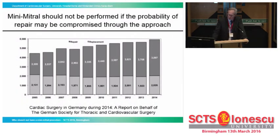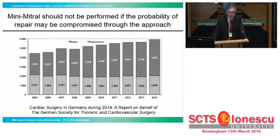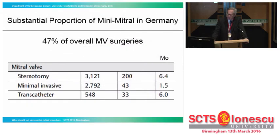This is the German registry for the year 2014, showing the proportion of mitral repair versus replacement. Two-thirds are repaired and about one-third replaced. This is an overview of over 60 institutions, with a large range between top centers and average or low-volume centers. The overall proportion of repair last year was 47%. Over 6,000 patients operated on the mitral valve in Germany, about 47% were mini-mitral cases with a mortality of 1.5% — a very high adoption rate compared to other countries in Europe.